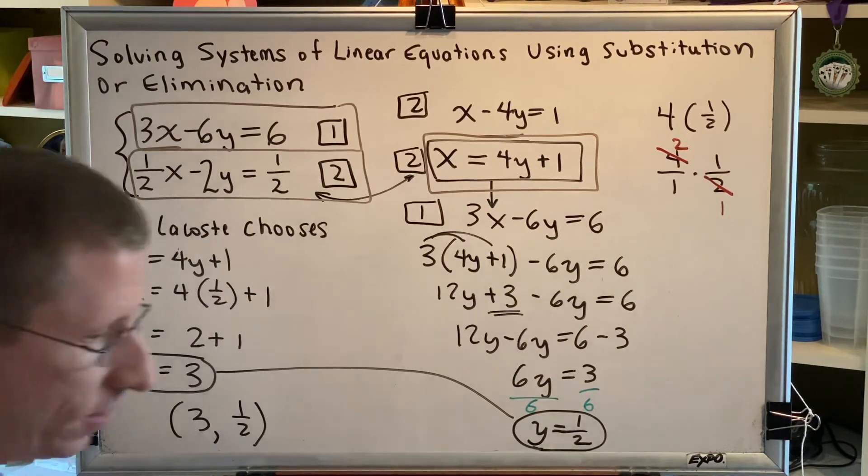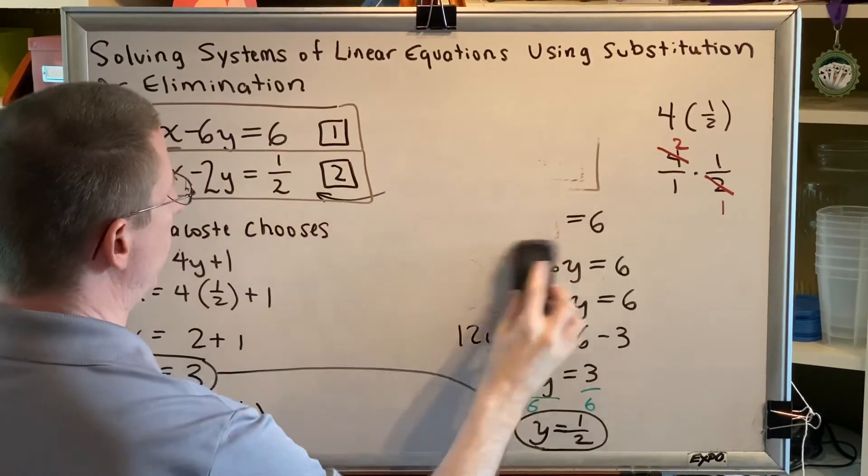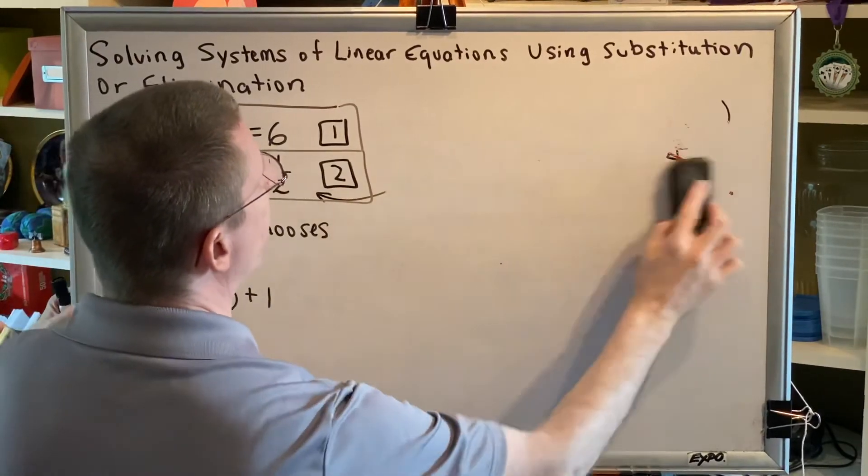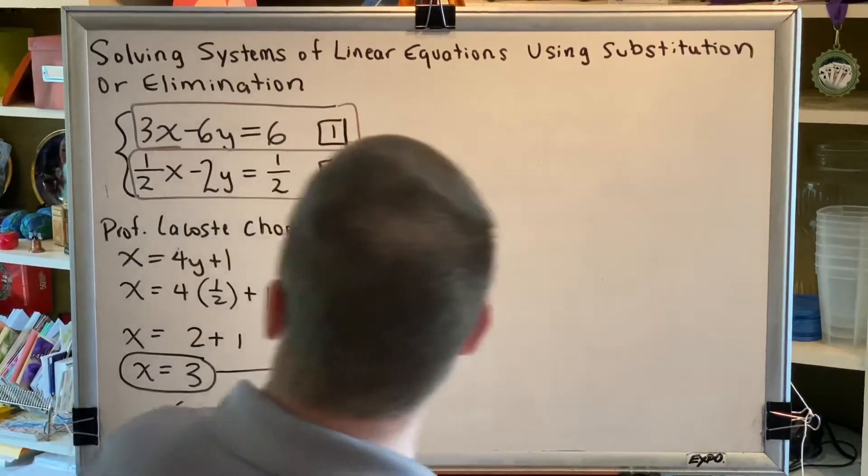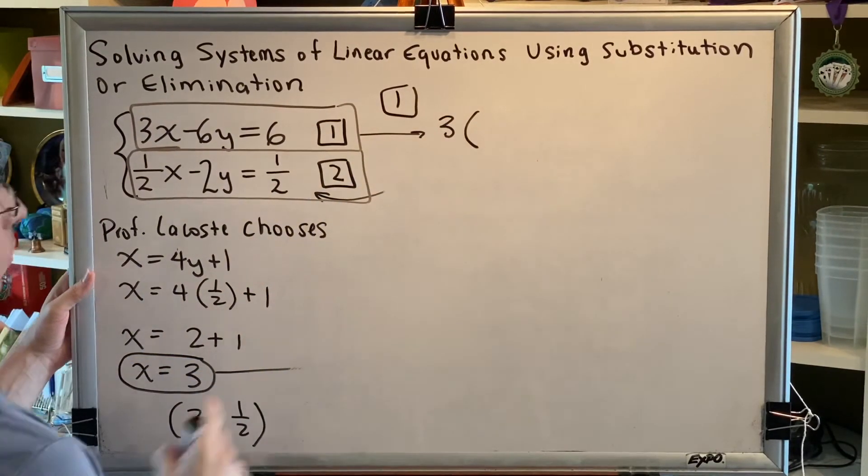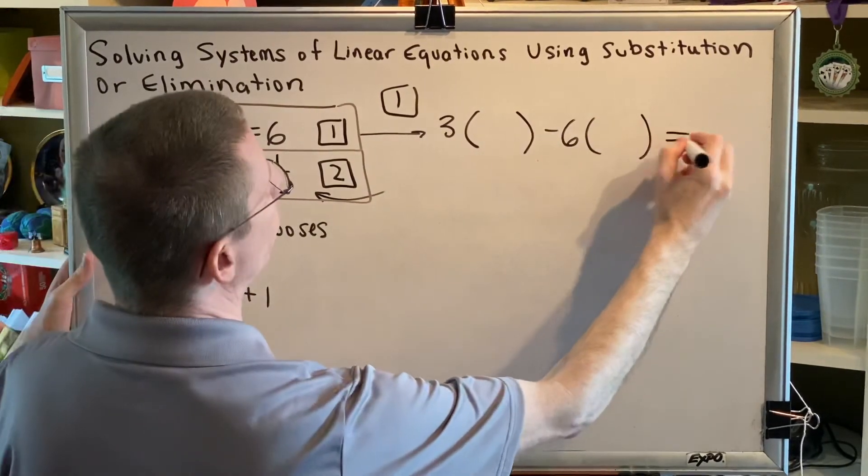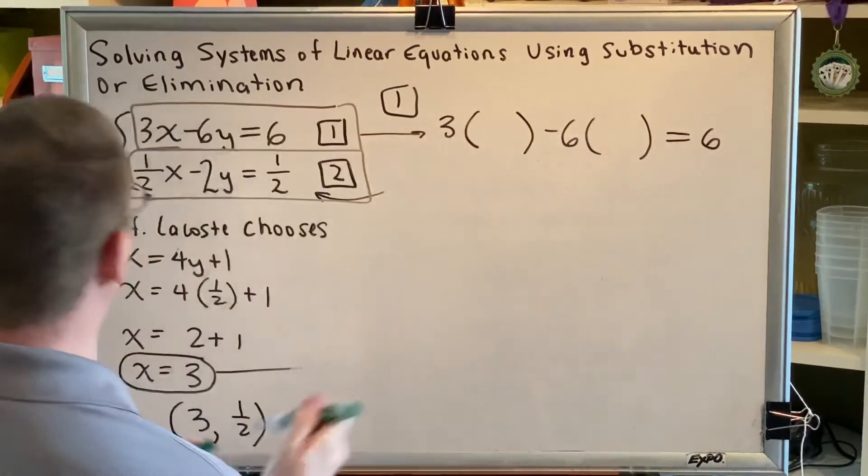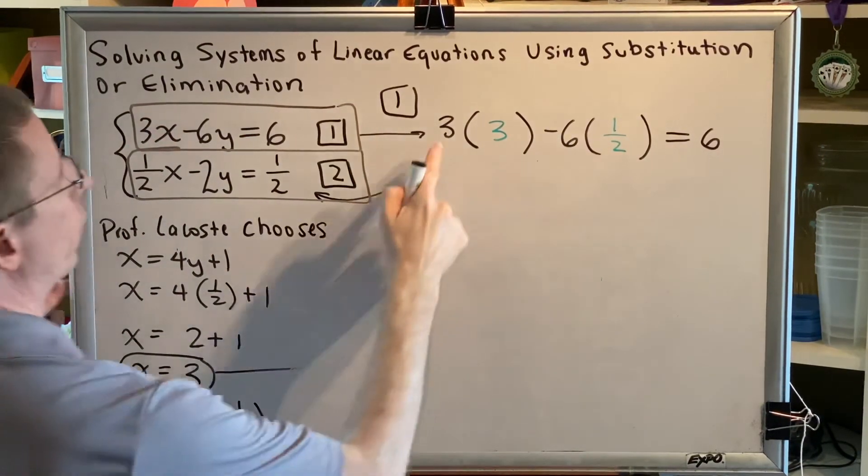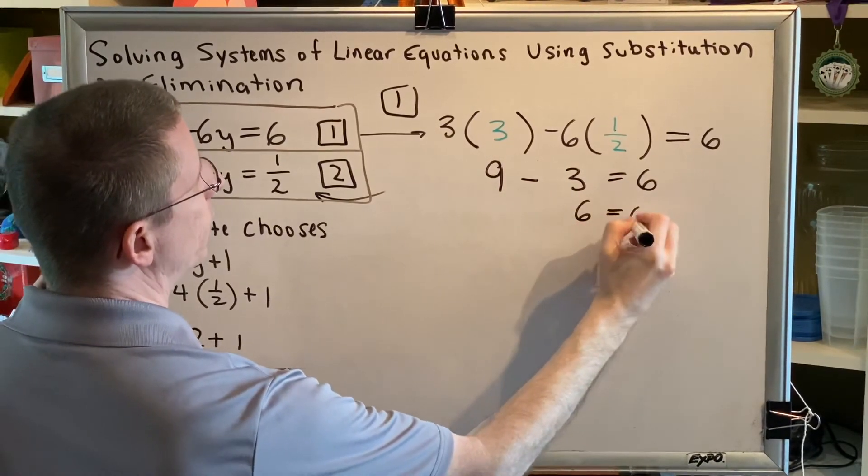Now all we have to do is check our answer. The way we do that is by plugging in x and y into both equations and showing that the left side and the right side are equal. Let's begin by plugging in to equation 1. So we get 3 times x, which is 3, minus 6 times y, which is 1 half, equals 6. Remember, we're replacing x with 3 and y with 1 half. So we get 3 times 3, which is 9, half of 6, which is 3, and 9 minus 3 is 6. So the left side and the right side are equal.